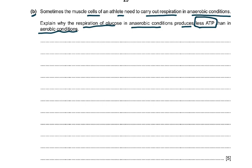Pyruvate is converted to lactate because oxygen is not available as the final electron acceptor. The electron transport chain — oxidative phosphorylation — does not occur. Most ATP is produced in the electron transport chain where NADH and FADH2 are processed, the proton gradient is established, and so on. There is no additional substrate-linked phosphorylation from the Krebs cycle either.